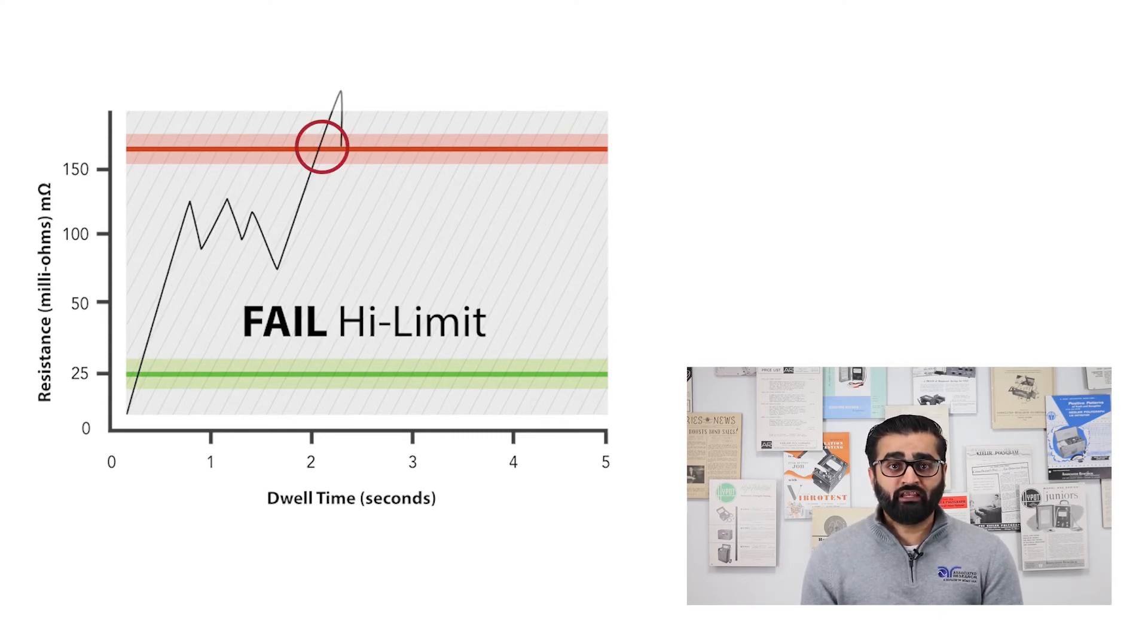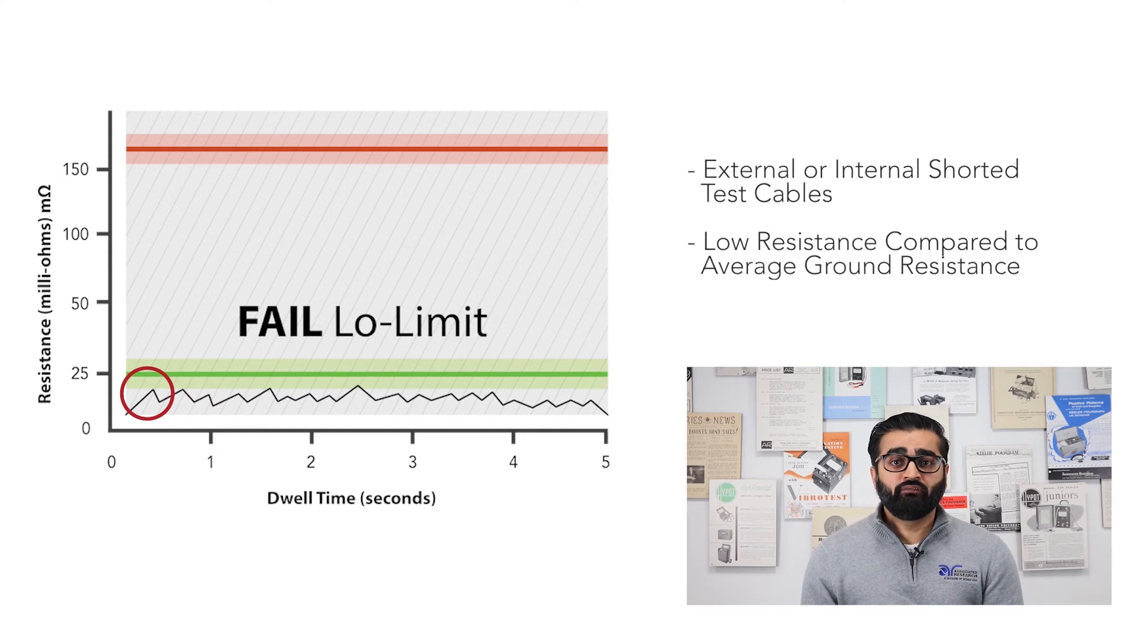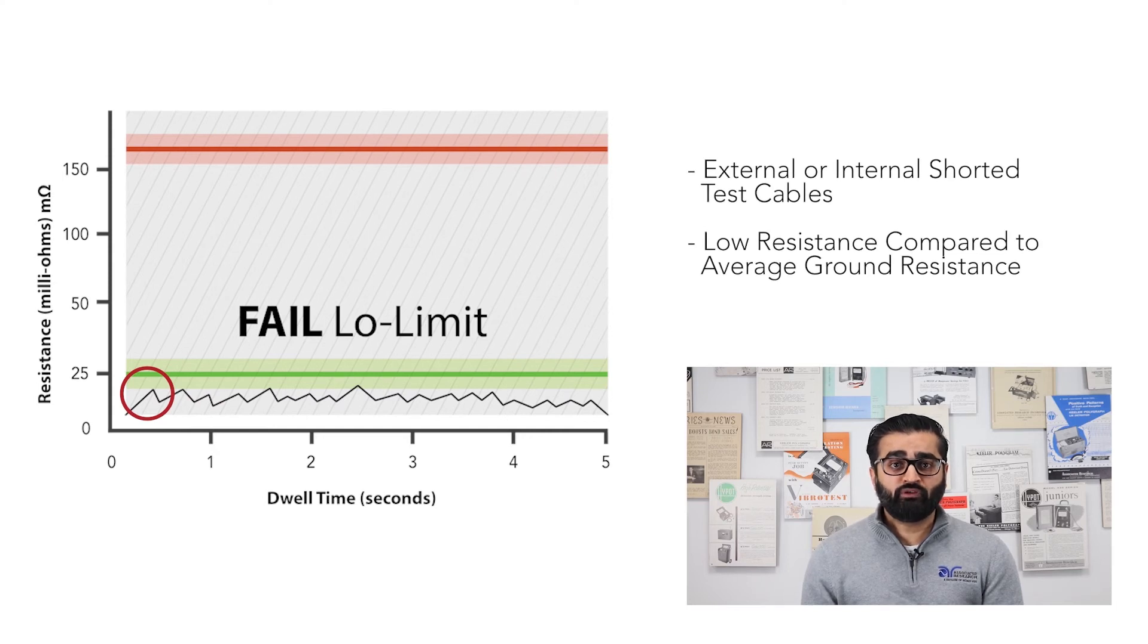If the resistance exceeds this high limit parameter, this is considered a high limit failure and the ground bond test has failed. If there are types of shorts between the test cables or equipment malfunctions, the ground bond resistance will read a small value, for example below 25 milliohms. While ultimately this small value is desirable, the low limit parameter can be utilized in order to flag measurements that are well below an average value for the given test.